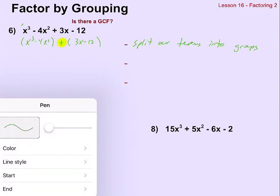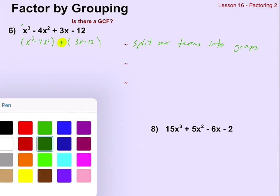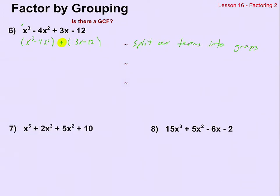Now that we've done that, our next step is going to be to factor each group separately. There'll be a GCF in each group, or if there is no GCF in each group, then we can't factor this, but we will try to factor out a GCF from each group.